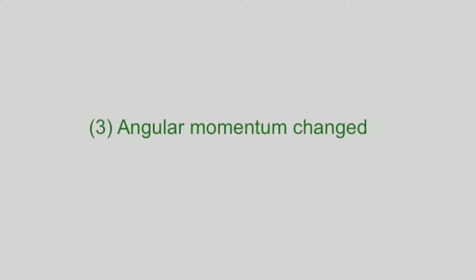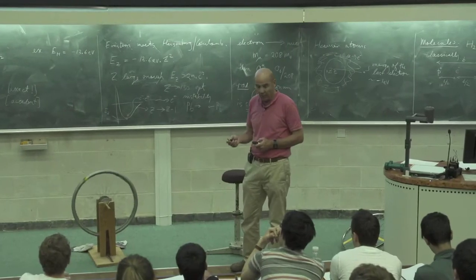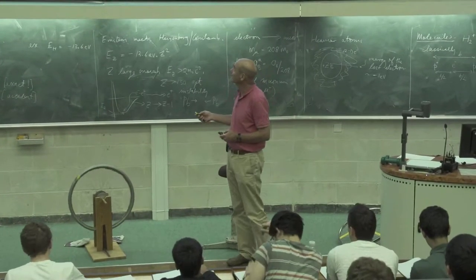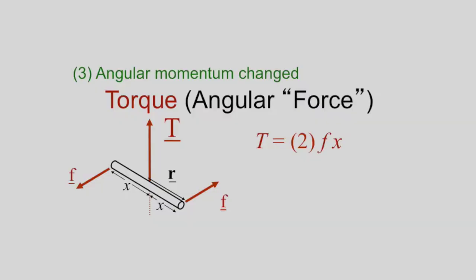So here we start part three, which is angular momentum changed. This is the character of torque, and this is also on the piece of paper that I handed out. If we have forces acting a distance x from a rotation axis, then x times f is the magnitude of the torque. In this balanced case I've taken two forces, so I've got this extra two.